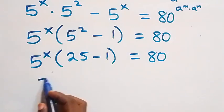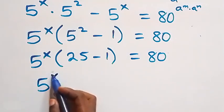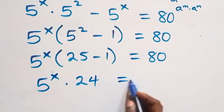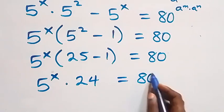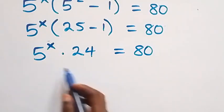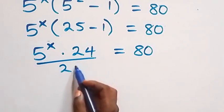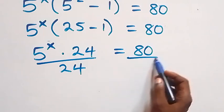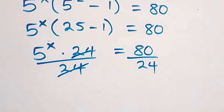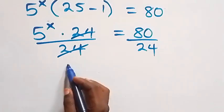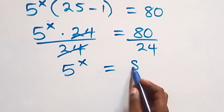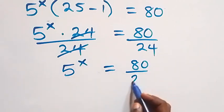Then we have 5 raised to power x times 24 equals 80. In the next step, we divide both sides by 24. The 24s cancel each other, and now we have 5 raised to power x equals 80 over 24.